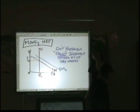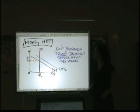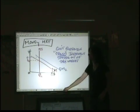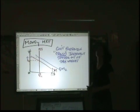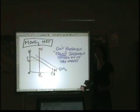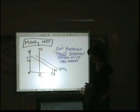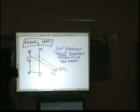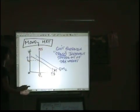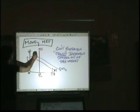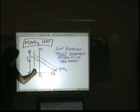What you might expect for shifting supply of money is a question giving you a scenario of something the Fed is doing. So if, for example, the Fed engages in selling bonds — selling bonds means the Fed gives you the bond and takes your money — that is going to reduce the money supply. Then what we would expect is that the money supply will shift left, and it's still going to be vertical.